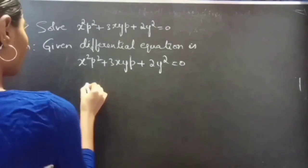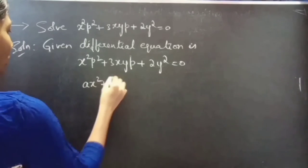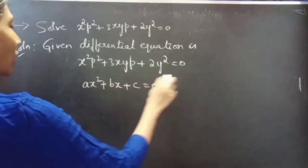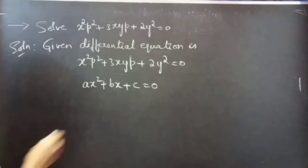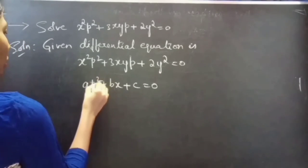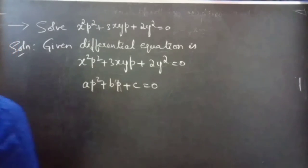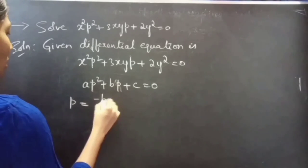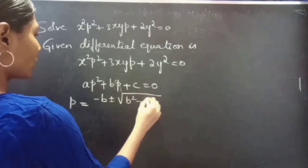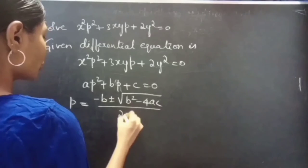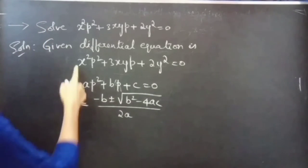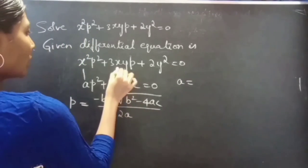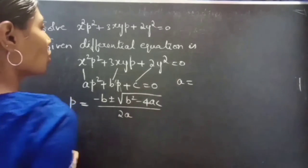Now compare the given equation with the quadratic equation Ax squared plus Bx plus C equals 0. Here we have a differential equation in p, so let's consider it as a quadratic equation in p. We have p equals minus b plus or minus square root of b squared minus 4ac, all over 2a. By comparing these two equations, we have a equals x squared, b equals 3xy, and c equals 2y squared.